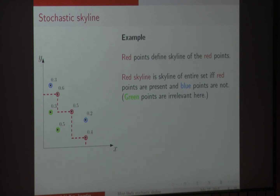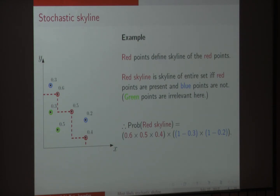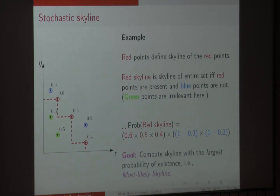We can now define the probability of the red skyline as simply the product of the existence probabilities of the red points — 0.6 times 0.5 times 0.4 — and the non-existence probabilities of the blue points, so 1 minus the corresponding existence probabilities. Our goal is to compute the skyline with the largest probability of existence. We call this the most likely skyline, which is the skyline the user is most likely to encounter in expectation.